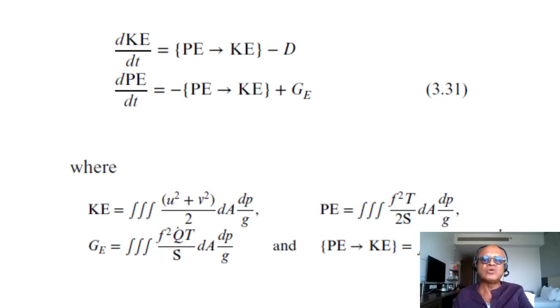Looking at the time rate of energy, you have a source term which converts potential energy to kinetic energy, and then a dissipation term of kinetic energy. For the change of potential energy, there is a loss term from PE to KE plus a generation term related to diabatic heating in the atmosphere.